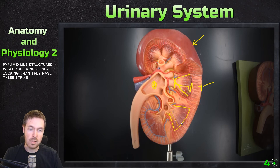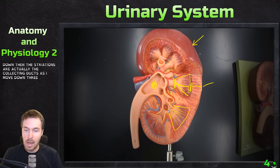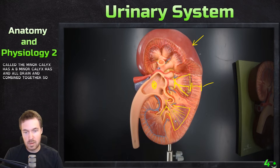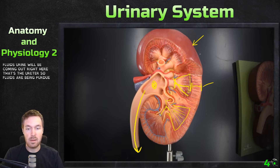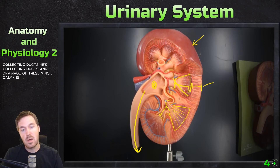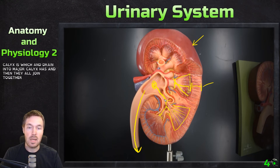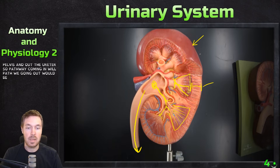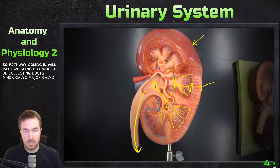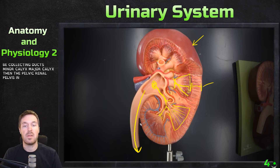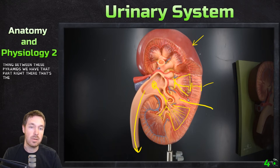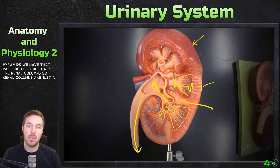Within the renal medulla, we have the renal pyramids — pyramid-shaped structures with striations running down them. These striations are actually collecting ducts. As fluid moves down, it collects into the minor calyxes, which drain into the major calyxes, which all join together into the renal pelvis and then exit through the ureter. So the outflow pathway is: collecting ducts → minor calyx → major calyx → renal pelvis → ureter.